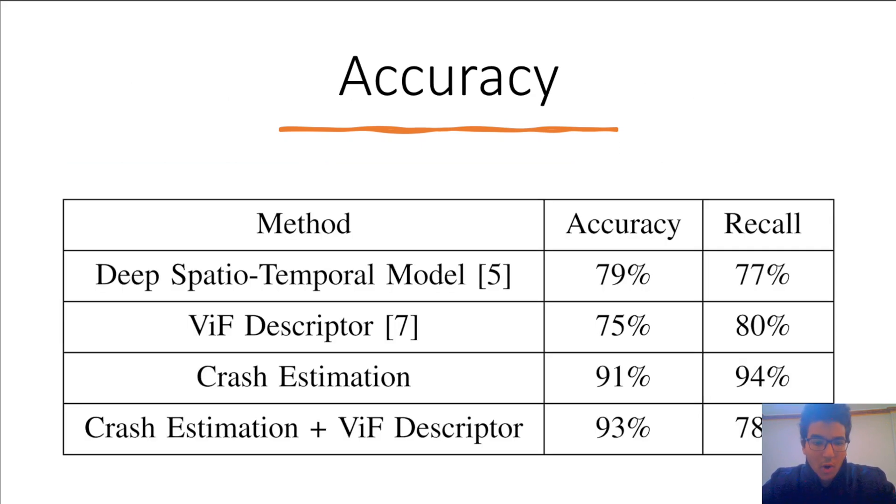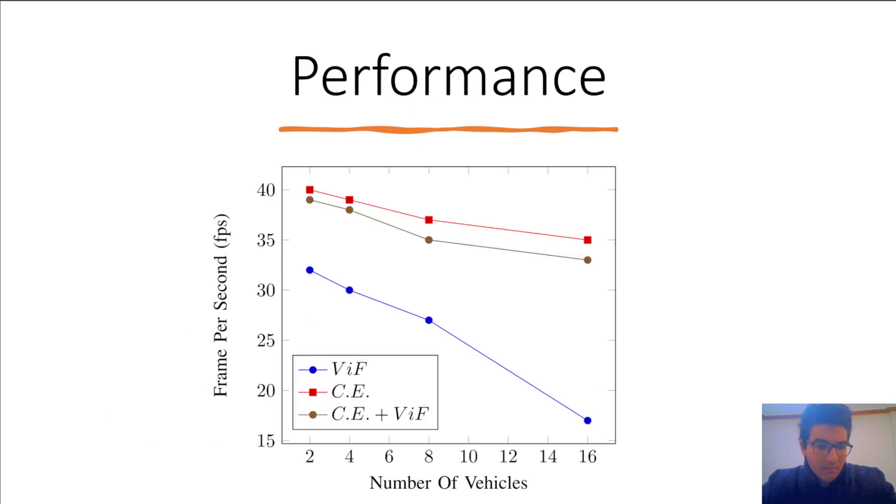Now it is time to compare our framework to others. From accuracy point of view, our framework beats all previous works by a big margin. We had slightly better accuracy from crash estimation plus violent flow descriptor than crash estimation only, but the recall percentage is much different. From performance point of view, we were able to test three frameworks, violent flow descriptor only, and crash estimation only, and both of them. The worst was the violent flow descriptor only, because it doesn't filter any footages and process them all. The best performance was the crash estimation only. We were able to achieve real-time performance on our normal laptops.